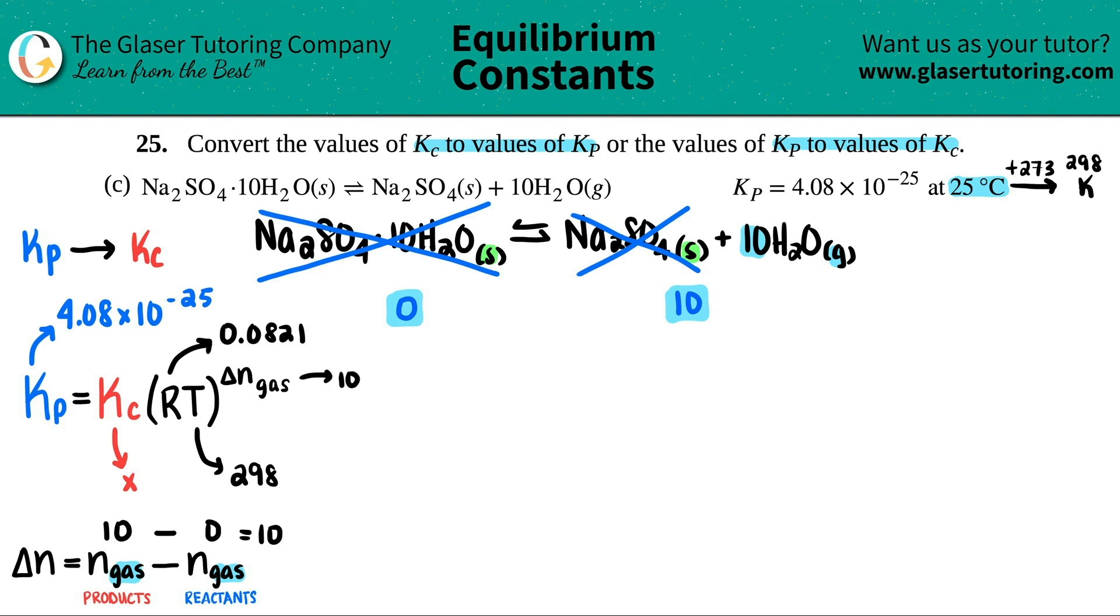Now I have all the numbers. So let's write it out. Kp, we have a number here. So we got 4.08 times 10 to the negative 25 equals, we're solving for X, that's the Kc. And now I'm going to times the 0.0821 times the 298 and raise that all to a 10.